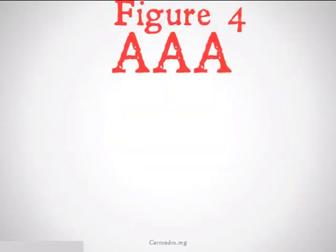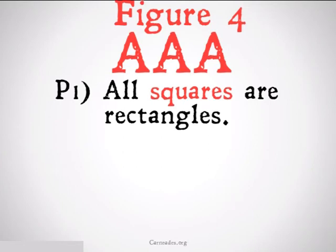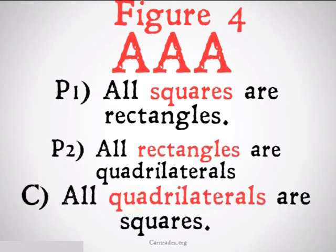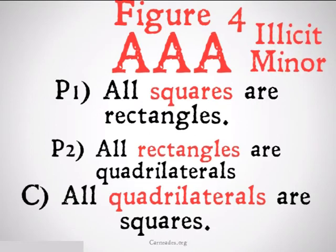Figure 4 AAAA: All squares are rectangles. All rectangles are quadrilaterals. Therefore, all quadrilaterals are squares. This is going to commit the fallacy of illicit minor because our minor term, quadrilaterals, is going to be distributed in the conclusion but not in the second premise where it appears.